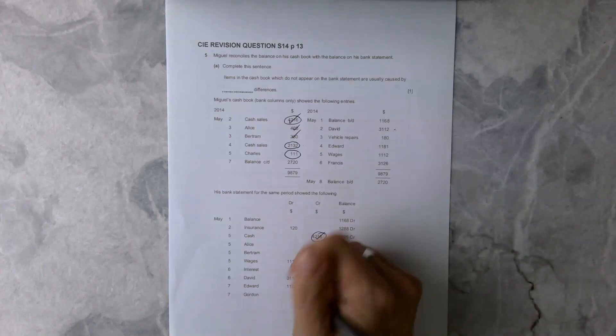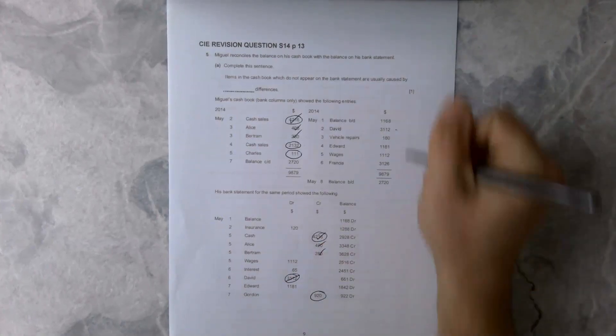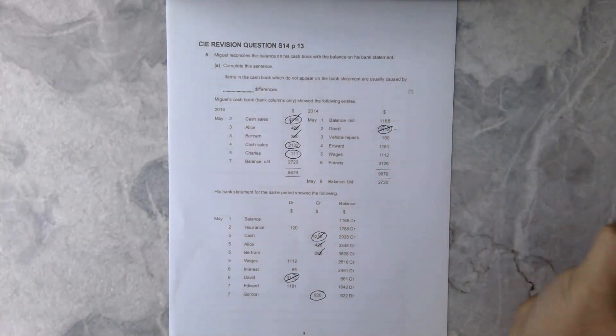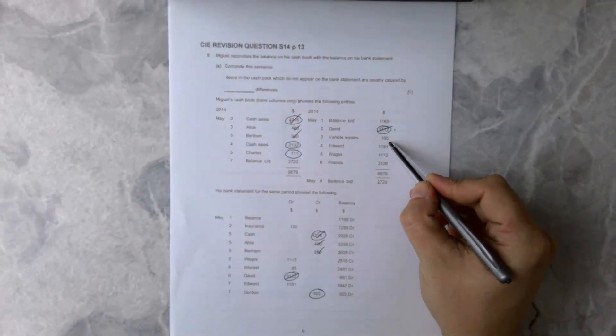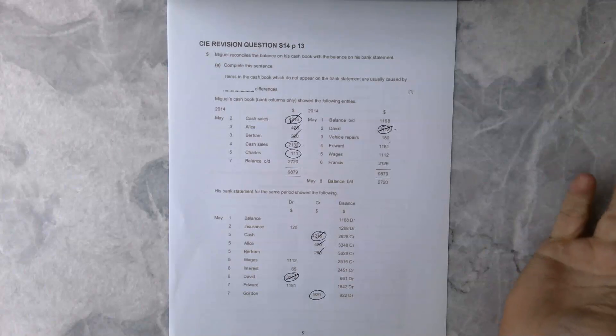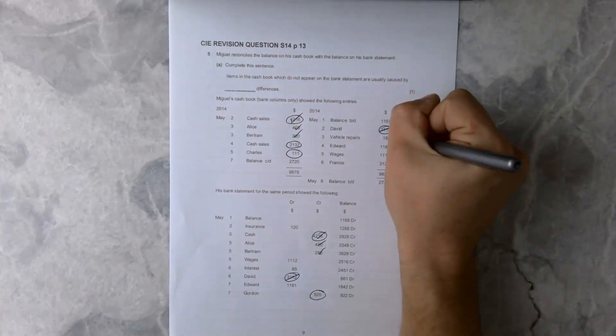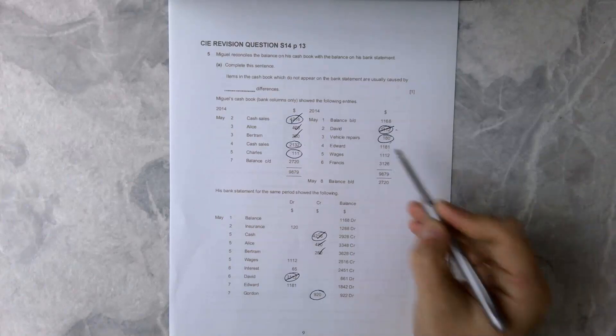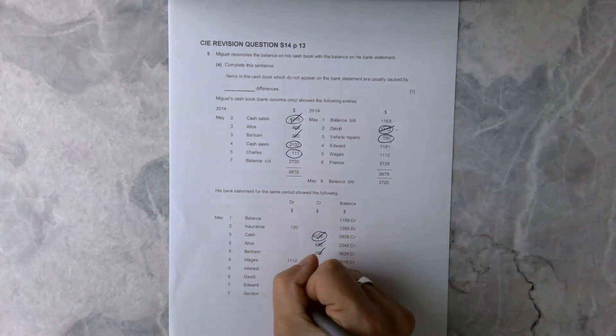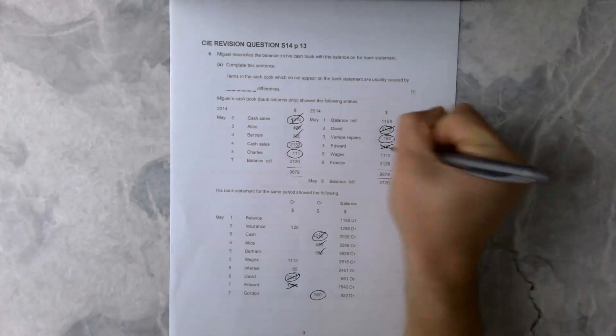We're going to do the same on the credit side. Can we see a figure from David at 3112? Yes we can, so we can cross that off. The vehicle repairs at 1180, no we can't see that, so we're going to circle it.